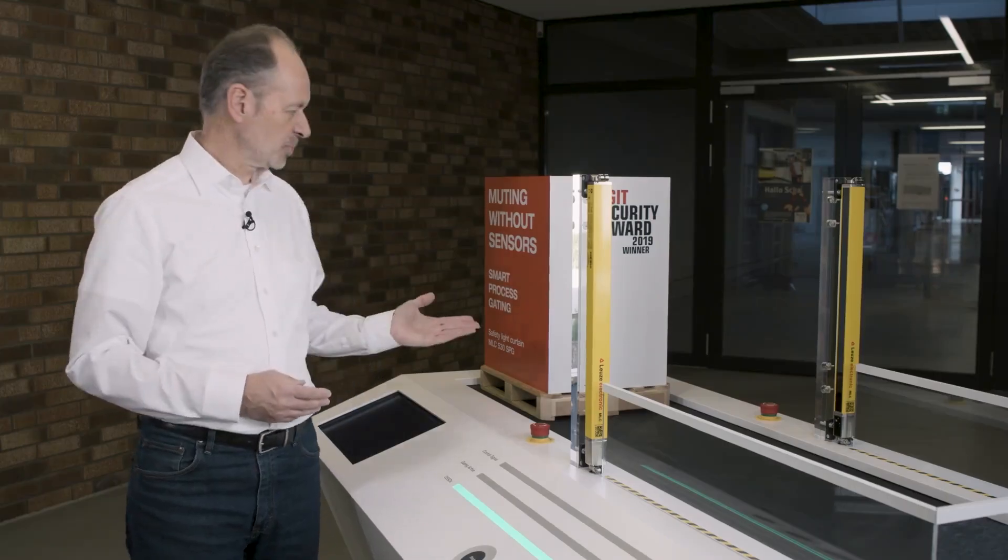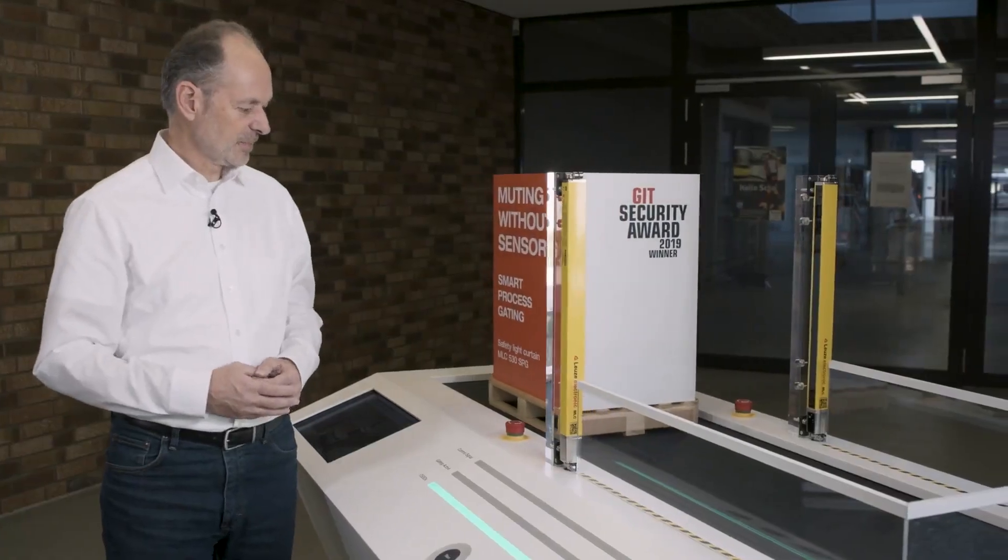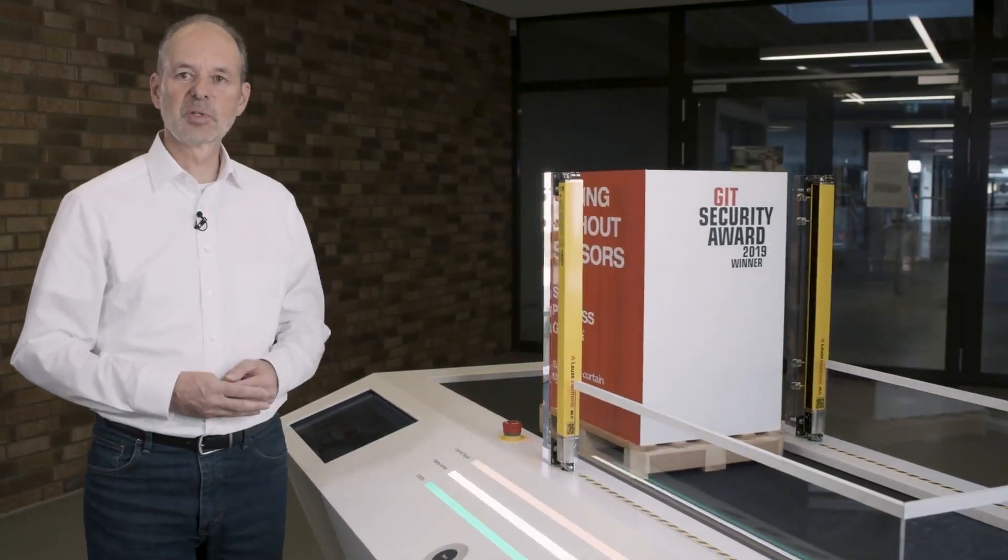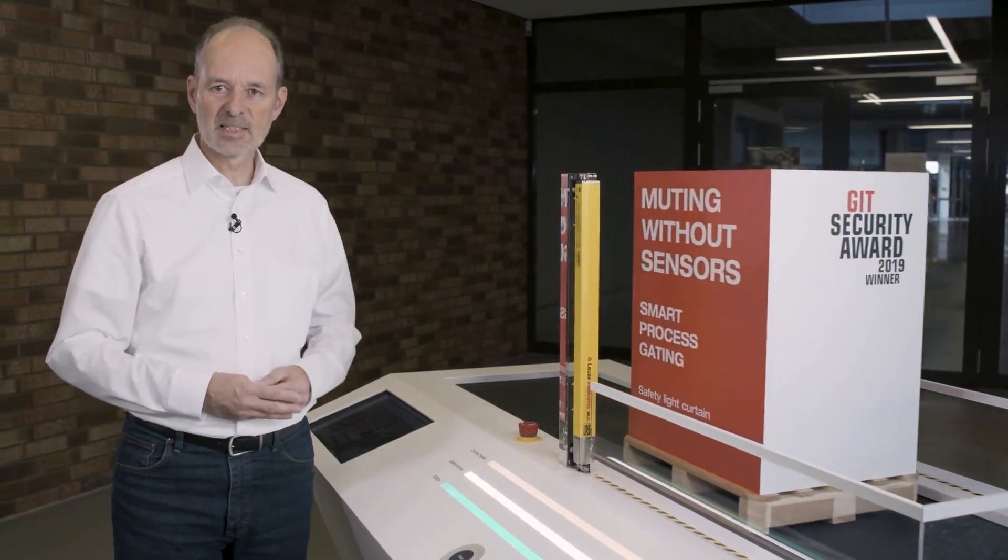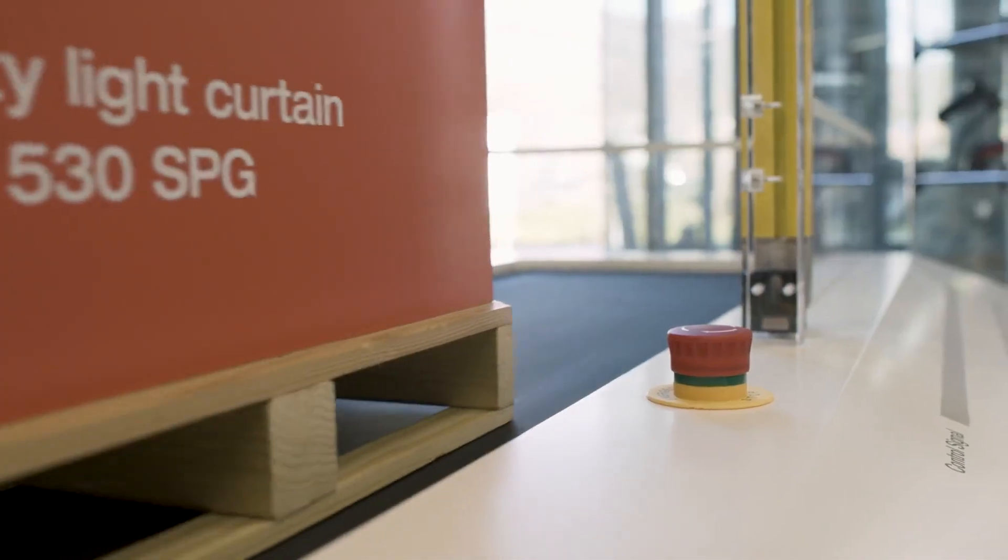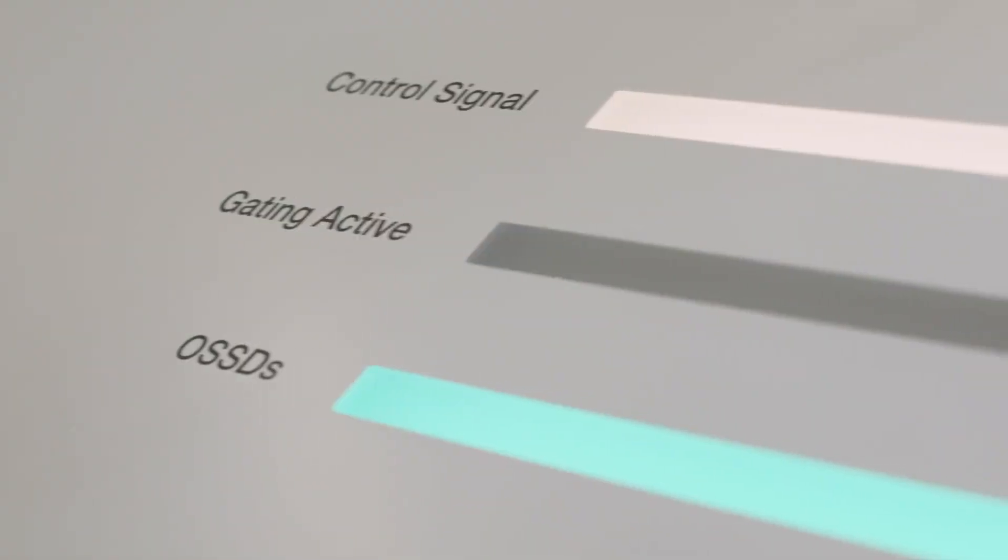Let's take a look at this with an example. Here we see how the switching signal is generated and the pallet passes through the safety curtain. Throughout the passage, the safety switching outputs remain active.